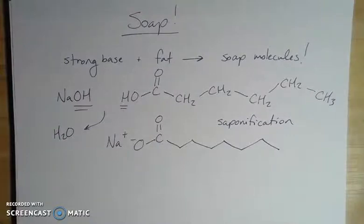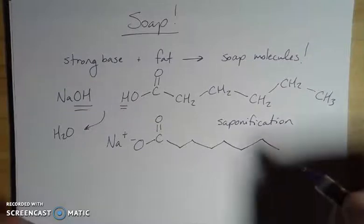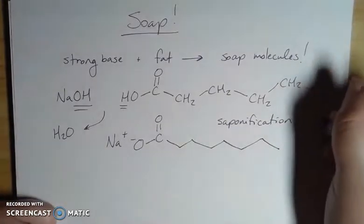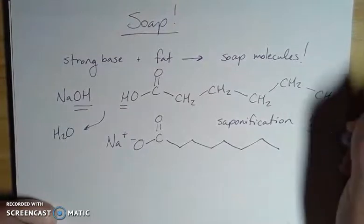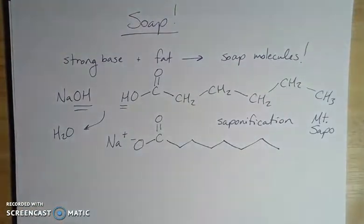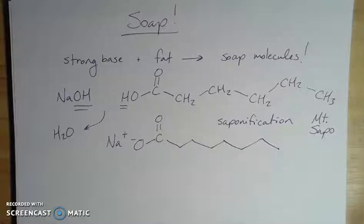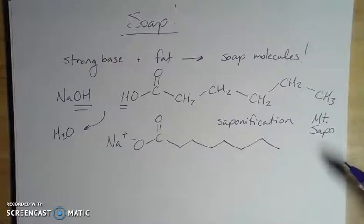This process is called saponification — a great vocabulary word to impress friends. Saponification is the process of creating soaps or surfactants, and it comes from a mountain in Italy called Mount Sapo. The story goes back to the Roman Empire, where they're thought to have discovered soap.